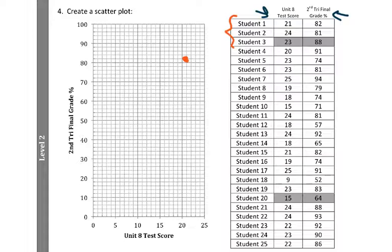Student 2 got a 24 on the test and ended up with an 81% final grade. So, got a little bit better on this test score, but overall their grade was a little bit less. Student 3 got a 23 on their test score and an 88% final grade. So, that would be right here, I do believe.